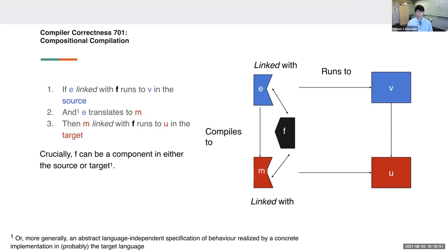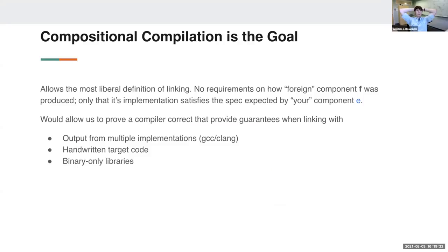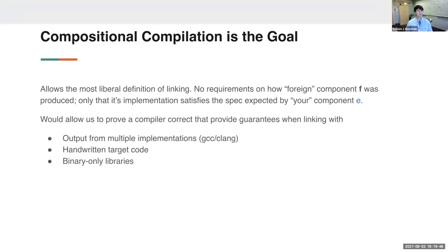This is the gold standard: we want to be able to link with things either in the source or the target — or some wholly abstract specification of behavior. At minimum, we want to link source and target things together without going through the compiler. For the rest of this talk I'll assume f is either in the source or target. This gives guarantees about realistic scenarios: multiple compiler implementations, handwritten code, binary-only libraries, without excessive restrictions.